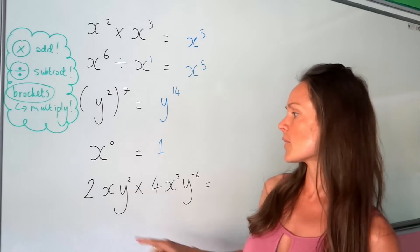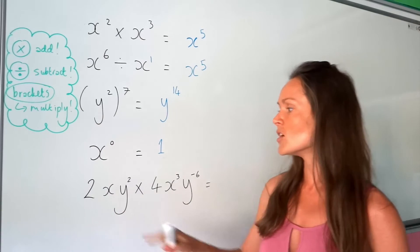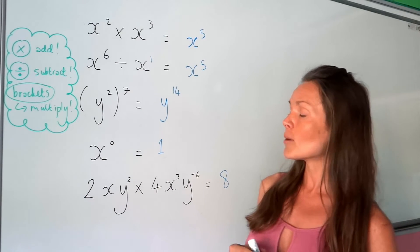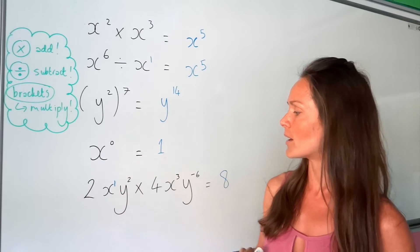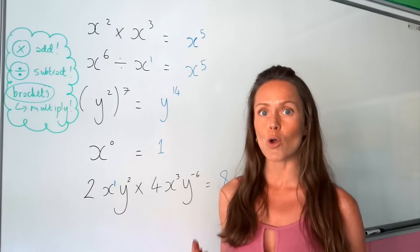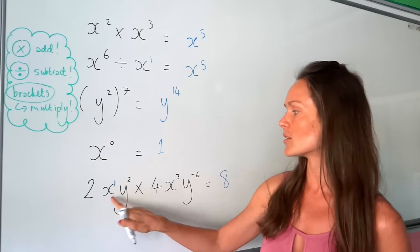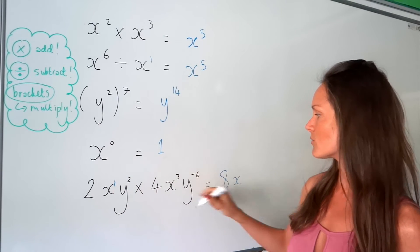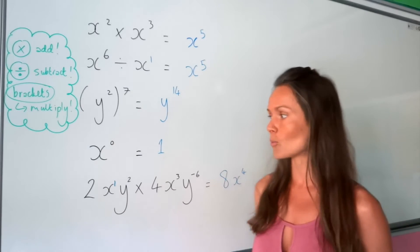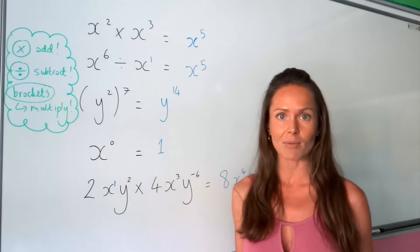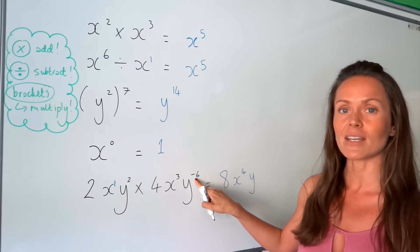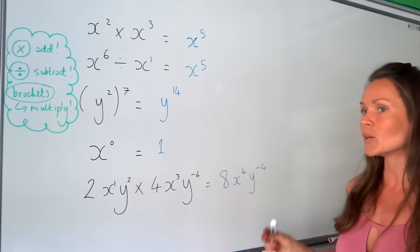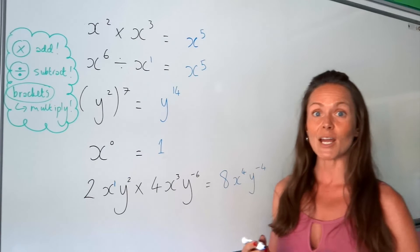Now for the bottom one: two times four is just eight, so you multiply the numbers as normal. Remember if you don't see a power there's an invisible one. The power rules only apply when the letter is the same, so for the x values we've got one plus three which is four. For the y values, two plus negative six is negative four. We can't combine the x and y terms because the power rules only work when the letter is the same.